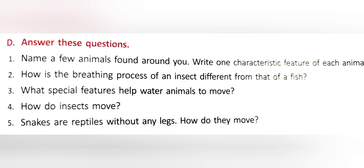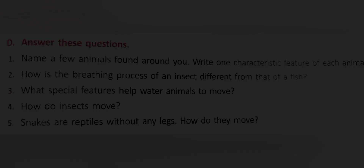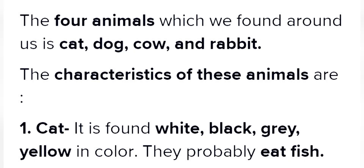Part D, question one: Name a few animals found around you and write one characteristic feature of each animal. The four animals found around us are cat, dog, cow, and rabbit.